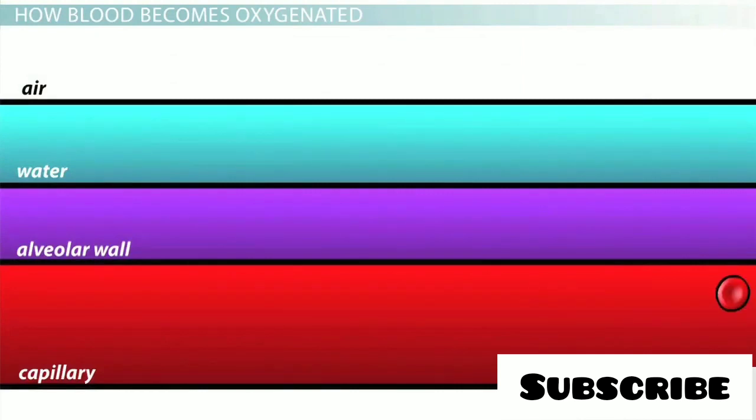The blood collects oxygen from the alveoli as it passes over the entire surface area created by the alveolar walls. However, the oxygen can't just magically jump from the air across the alveoli and into the blood. It has to cross each barrier one at a time.